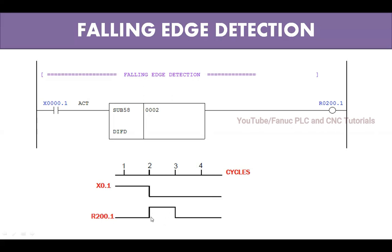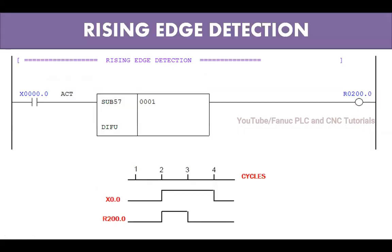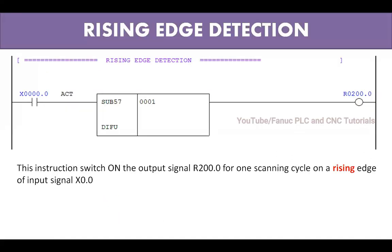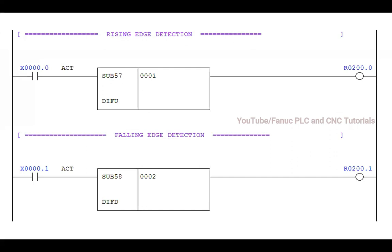Both work almost the same — the output is on for only one cycle. The difference is: rising edge means when the input becomes 0 to 1, the output is on; and in falling edge, when the input becomes 1 to 0, the output is on for one scan cycle. Both rising edge and falling edge instructions work in ladder and you can use them for any ladder operation in a machine.